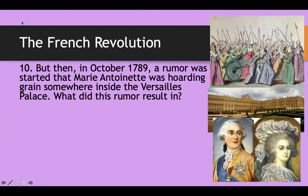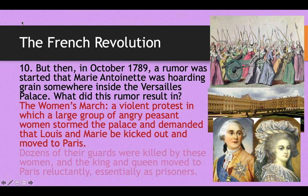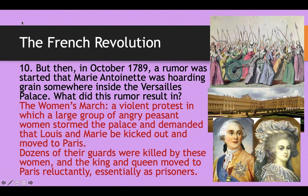But then it didn't turn out that way. In October of 1789, a rumor was started that Marie Antoinette was hoarding grain somewhere inside the Palace of Versailles. This rumor resulted in the Women's March — a violent protest in which a large group of angry peasant women, led by merchant women called the Fish Ladies who worked in the fish market, stormed the palace. They demanded that Louis and Marie be moved to Paris, stormed the Palace of Versailles, killed dozens of guards, and took the King and Queen prisoner to Paris.